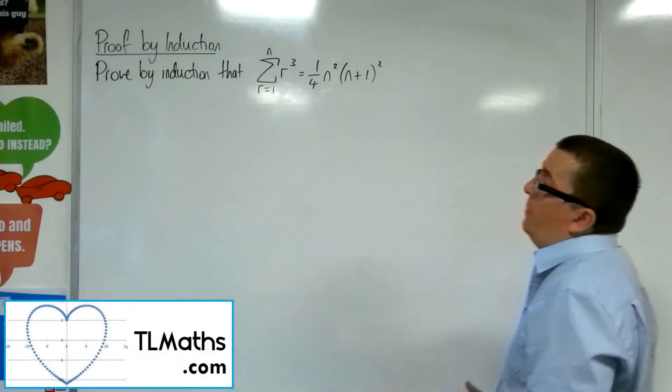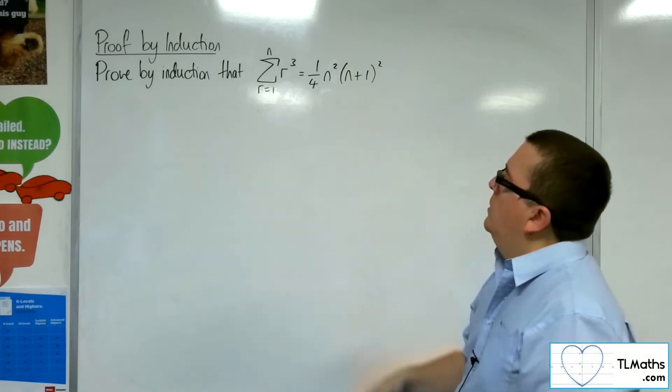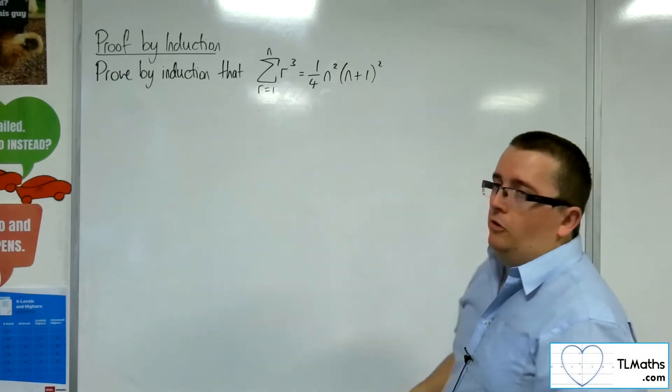So in this video, I want to prove by induction that the sum of r cubed from r is 1 to n is 1 quarter n squared times n plus 1 squared.